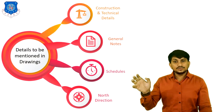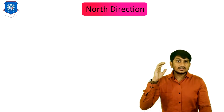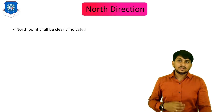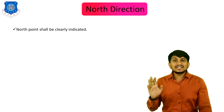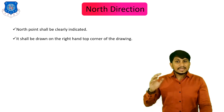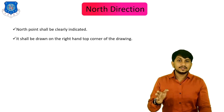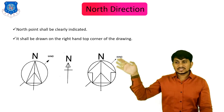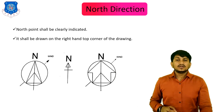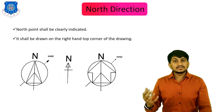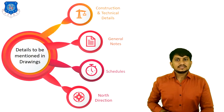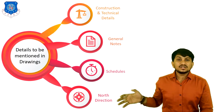The fourth detail mentioned in drawings is the direction. Usually, the north direction shall be clearly indicated — it shall be drawn on the right-hand top corner of the drawing. Sometimes it also gives the wind direction. These are the various details to be mentioned in drawings.